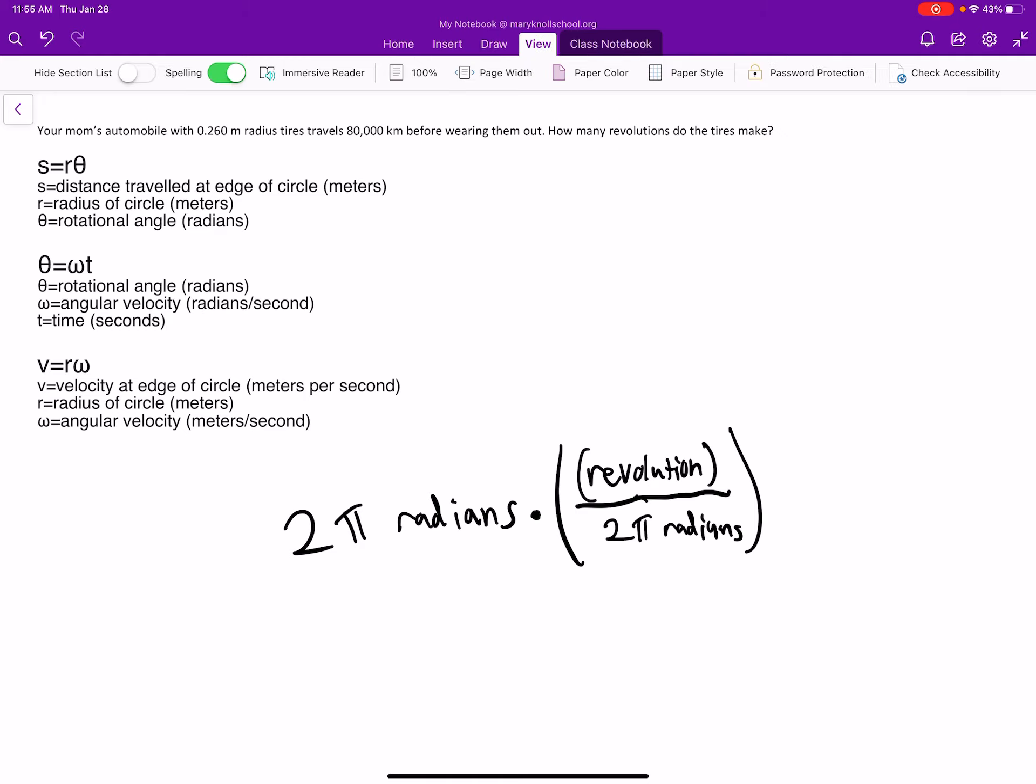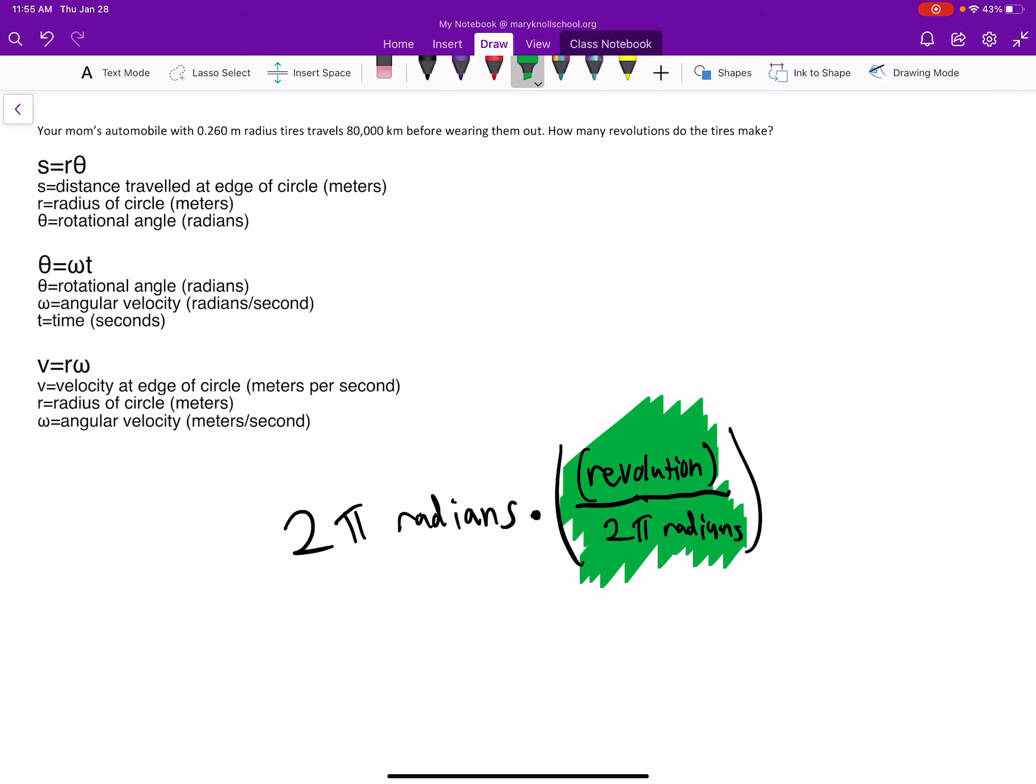We know this whole thing right here is actually 1 because 1 revolution is 2π radians. So we're not multiplying this 2π radians by any number other than 1. So what we're going to do here is just see how the math plays out.